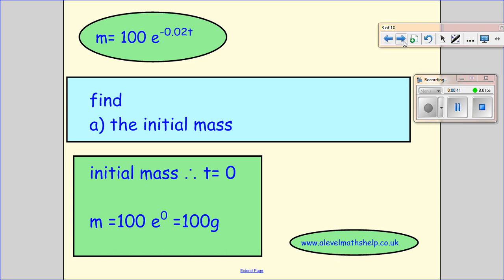So we're going to go one part at a time. The initial mass is just when t equals 0, so it's right at the beginning of the experiment or the measurements. So we put t equals 0 in here, anything to the power of 0 is 1, so 100 times 1 is just going to give you 100. So the initial mass is 100 grams.